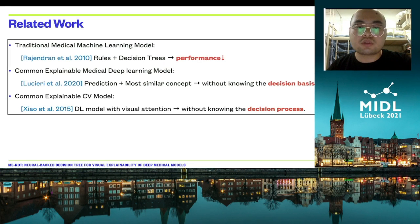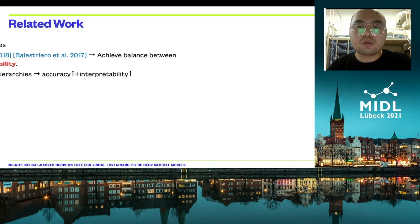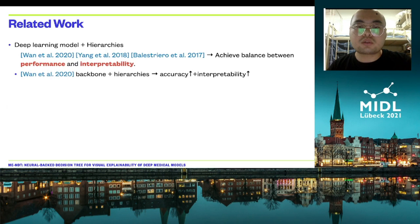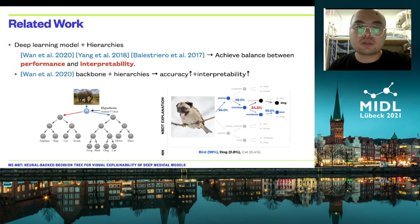A straightforward strategy is to combine the hierarchical tree structure with deep learning models. For instance, this research combines them together and therefore achieves a balance between performance and interpretability. In this work, we are also inspired by the recent neural back-end decision tree model from Wan et al., which can improve accuracy and interpretability.